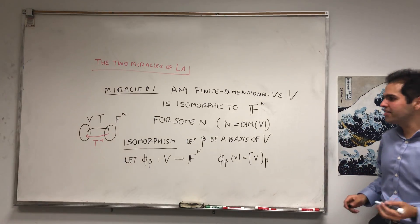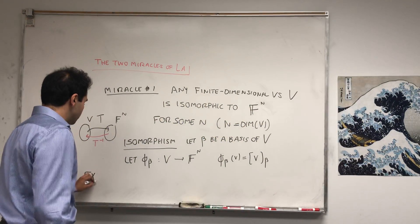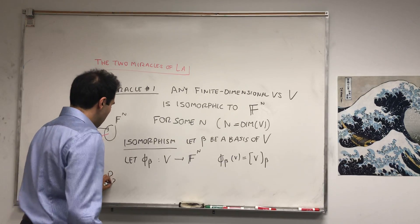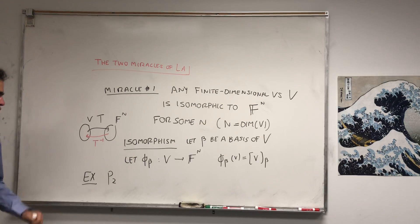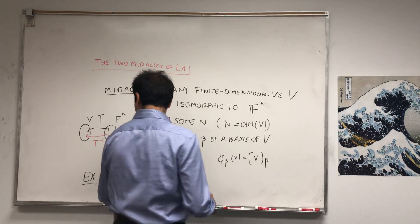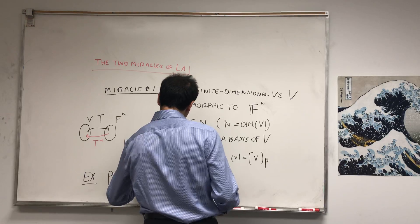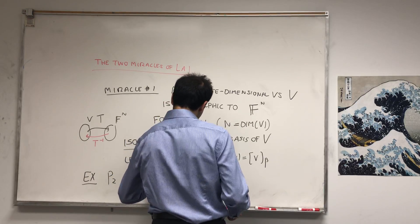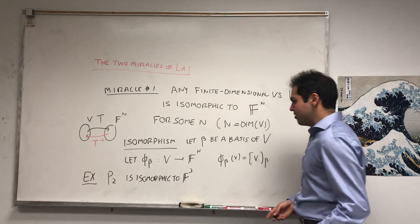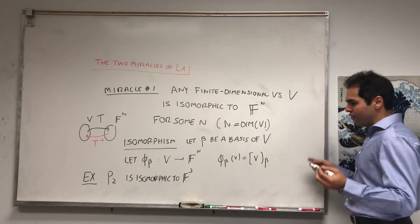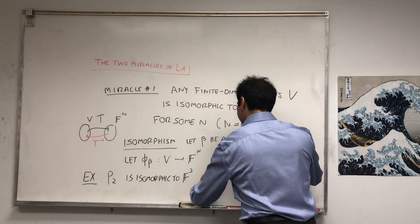Let me illustrate this with an example. So consider this really abstract space P2, which is the space of polynomials of degree less than or equal to 2, and this abstract vector space is isomorphic to F^3 because of the following.